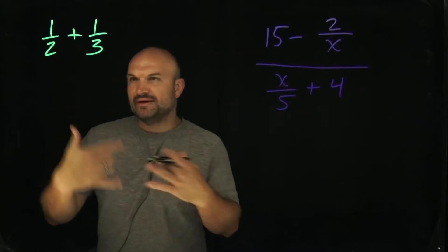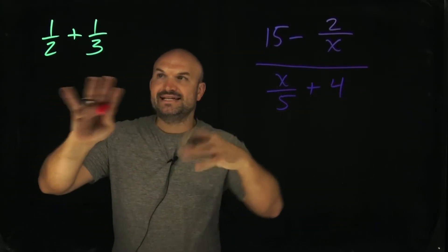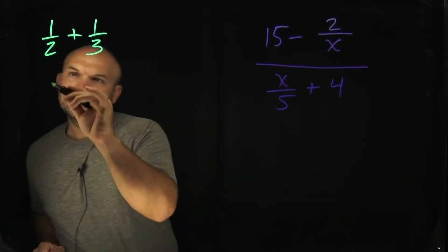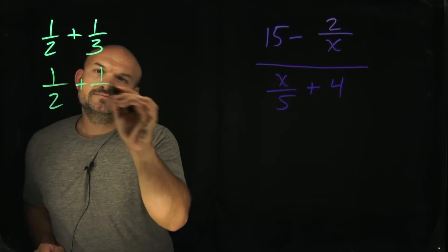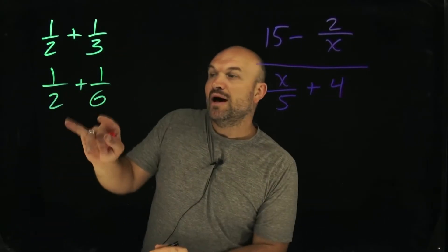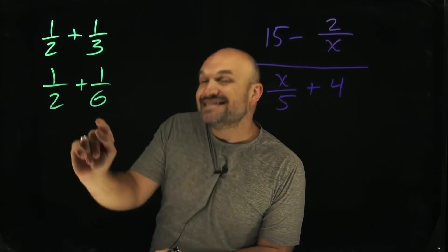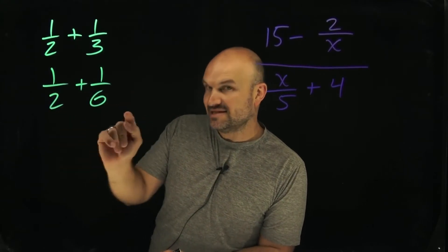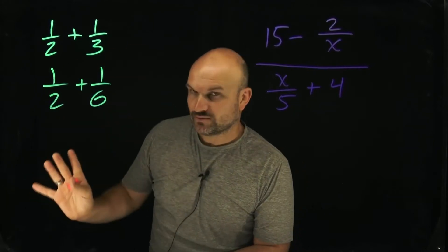The reason why this approach was helpful is, here, 12 is not the least common denominator. 6 is the least common denominator because 2 divides in 6 and 6 divides in 6. So you don't always want to multiply them.